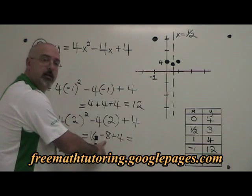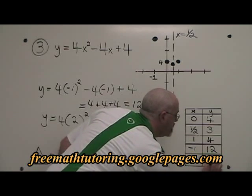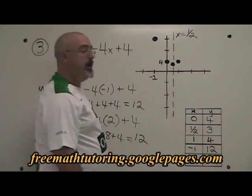16 minus 8 is 8 plus 4 equals 12 again. I have the point 2, 12 which I put into the table and onto my graph.